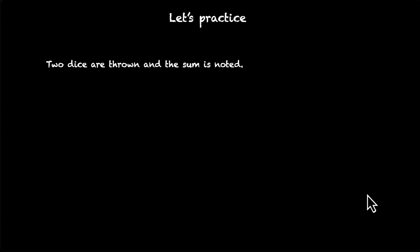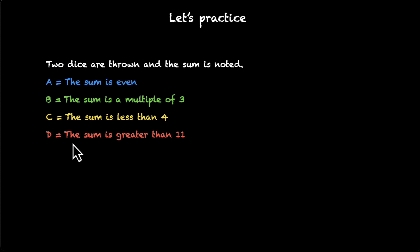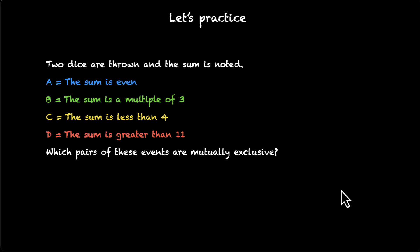Now let's practice what we have just learned. We'll throw two dice and note the sum. Here is a set of four events: event A is the sum is even; event B is the sum is a multiple of 3; event C is the sum is less than 4; and event D is the sum is greater than 11. Now pause the video, think about these four events, and figure out which pairs of these events are mutually exclusive.